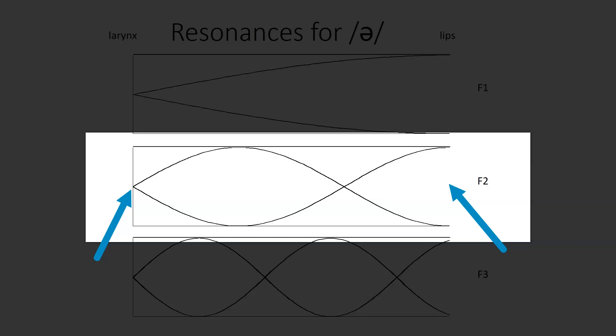In that second formant standing wave, there's another anti-node and a node in the middle of the vocal tract.